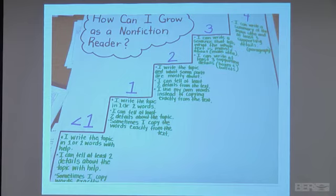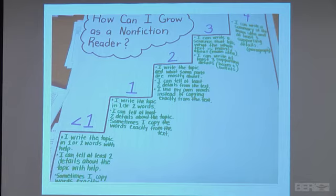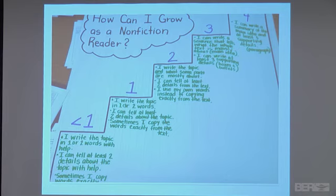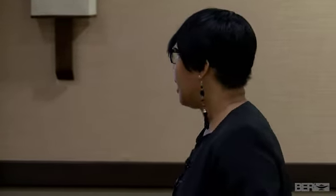Here's a great example from a classroom I've worked in where a teacher set up a ladder — almost like a step staircase — up towards becoming a nonfiction reader. At each tier the student accumulates their own data, signaling where they fall and discussing what they're going to do to get to that next step. We start at the very bottom: 'I write the topic in one or two words with help.' 'I can tell at least two details about the topic with help.' Sometimes students copy the words exactly from the page, but then we start to build this progression. The student is a data partner in that process, so they know exactly where they fall — it's no surprise when it's time to take a test, because they know exactly what skills they have entering into the task.